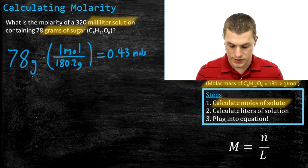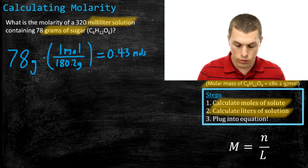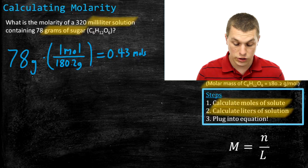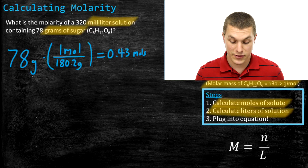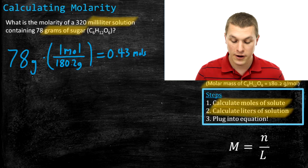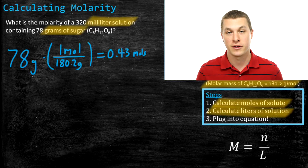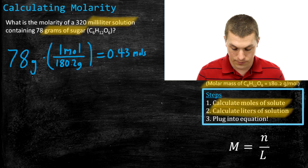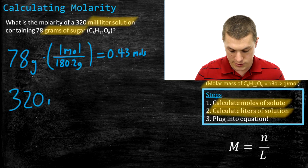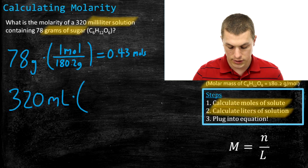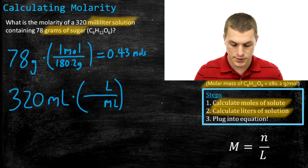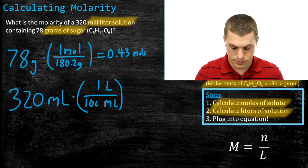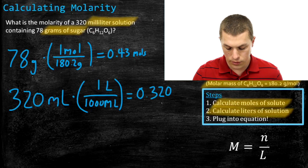Now we calculate the liters of our solution. We're given milliliters and need liters. You could be given any unit of volume — megaliters, gallons, cubic centimeters — and converting to liters is always required for molarity. So 320 milliliters: we write 1,000 milliliters on the bottom and 1 liter on top. Doing that division gives us 0.320 liters.